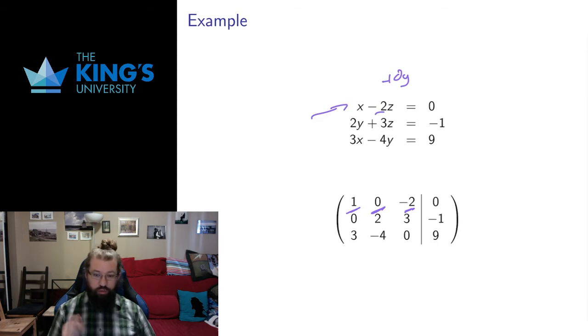Likewise, there's no x in the second equation, so the second row has a 0 for the x. And there's no z in the third equation, so the third row has a 0 for the z. Everything else translates down. Those 0s represent the missing variables.